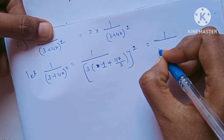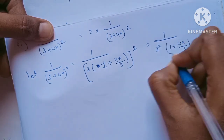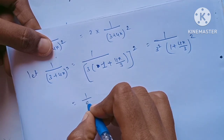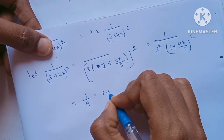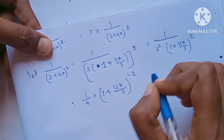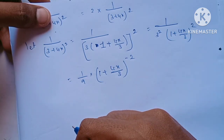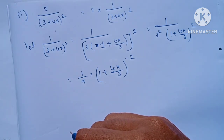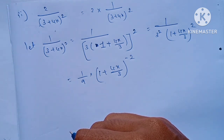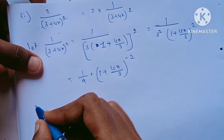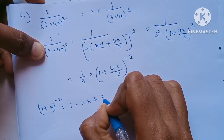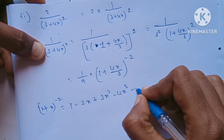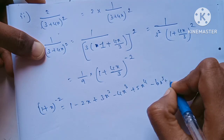We apply the square rule and use the formula for (1+x)^(-2), which is: 1 minus 2x plus 3x squared minus 4x cubed plus 5x to the power 4 minus 6x to the power 5, and so on.